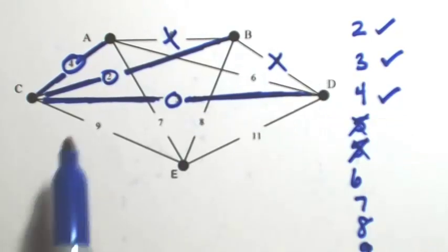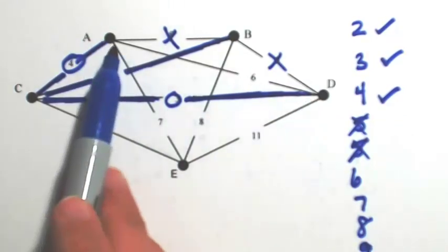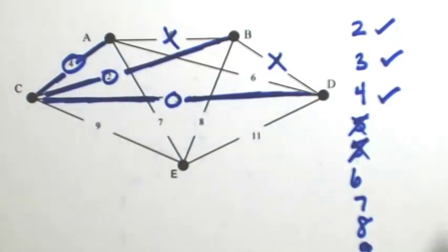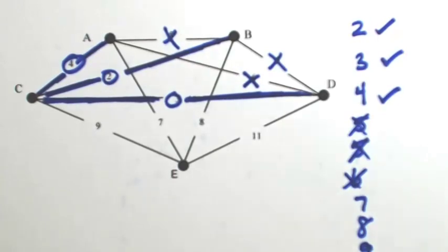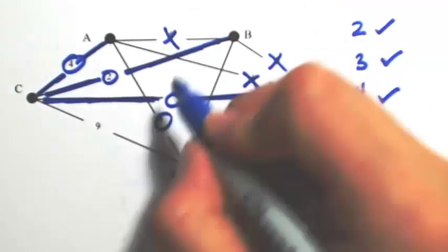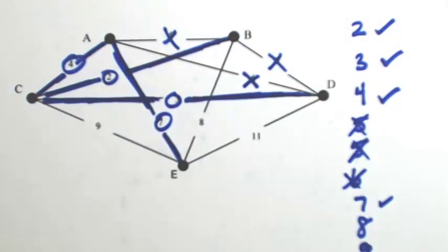The next one is 6. If I use 6, that's going to close out a circuit between A, C, and D. So I'm not going to use that. Seven looks okay. It's not going to close out a circuit anywhere because there's only one edge coming out of E.